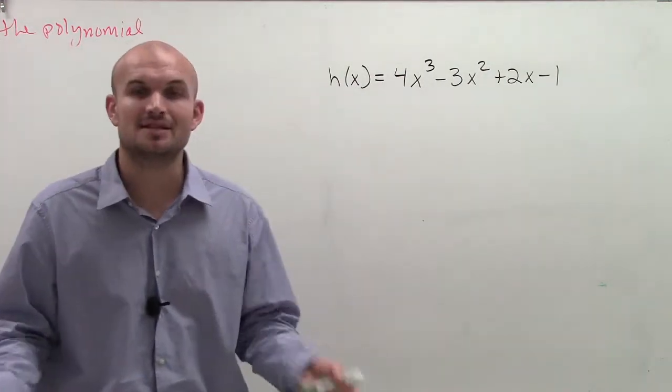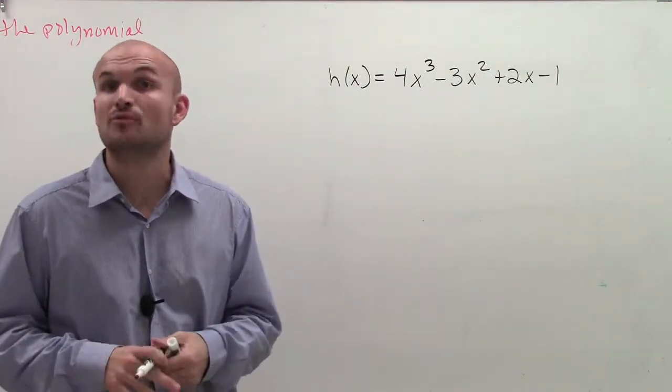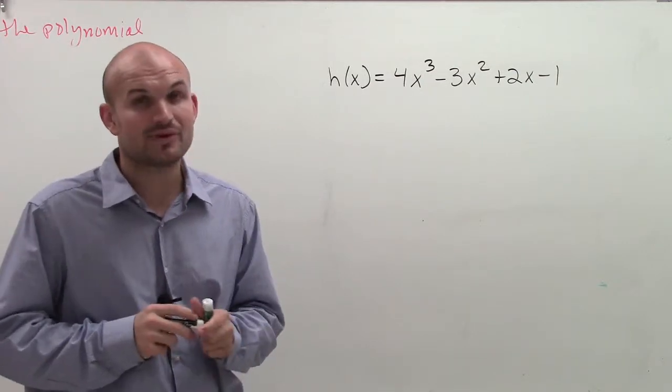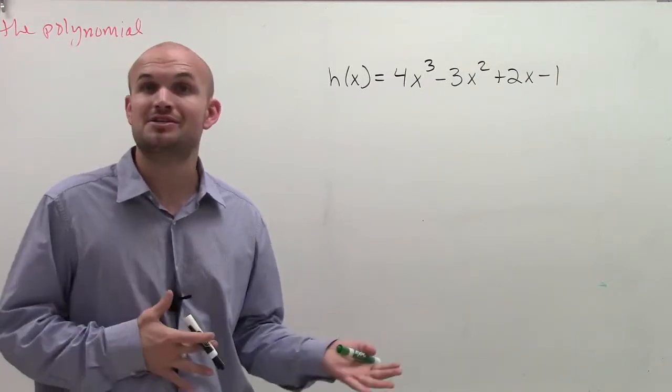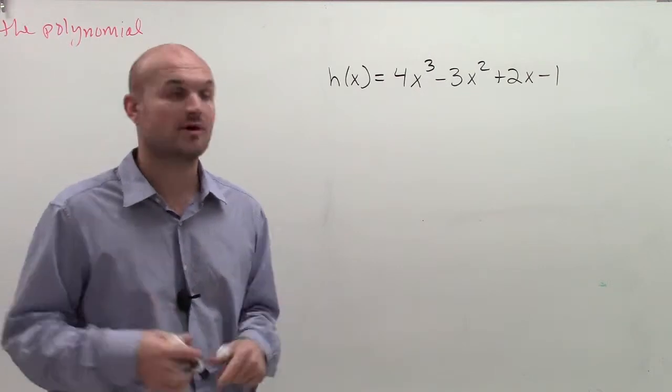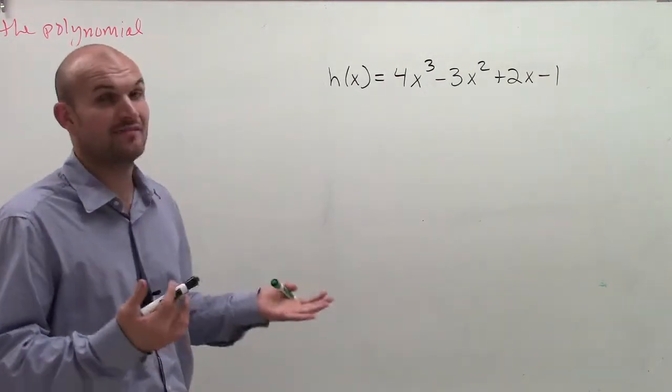And what that's going to tell us is the number of positive and negative real zeros. It's not going to help us if we have imaginary zeros, but it will tell us maybe how many imaginary zeros we have, or if we have any at all.